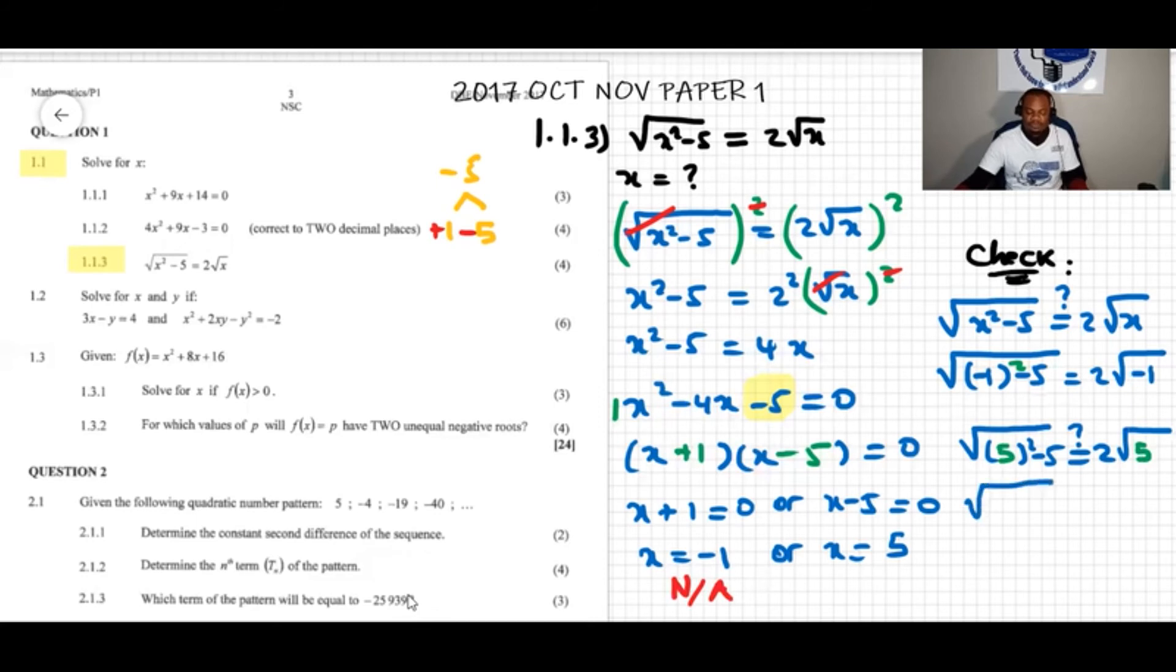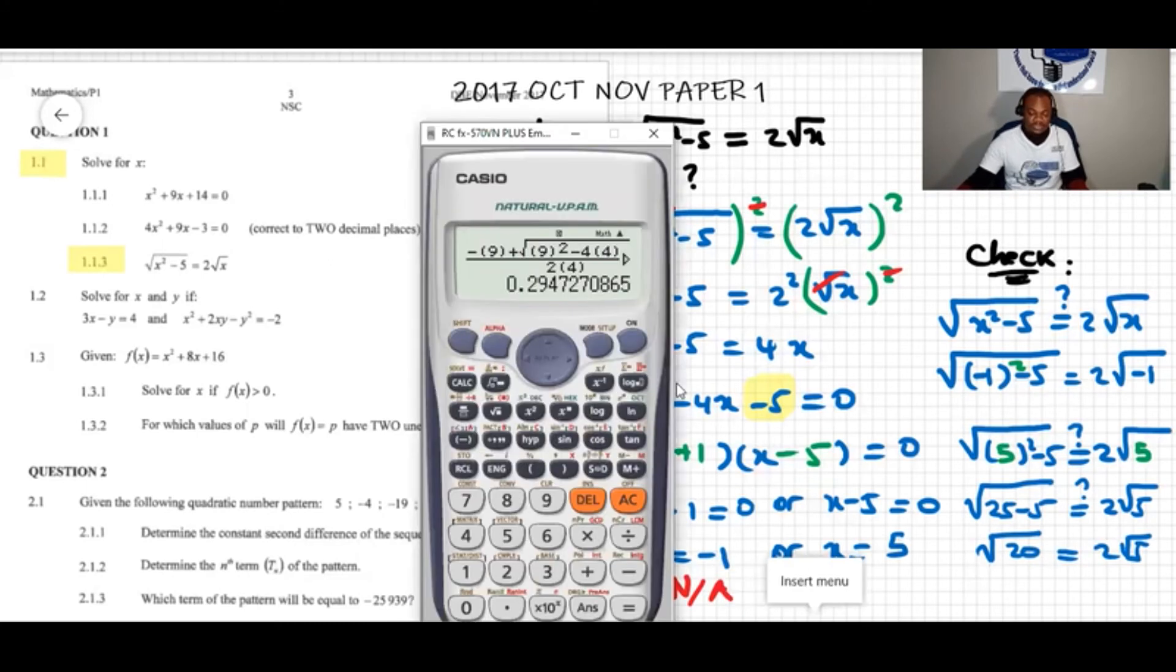So we're left with 25 minus 5. Is that equal to 2 root 5? Let's see. 25 minus 5 is 20, so it's root 20. Is root 20 equal to 2 root 5?